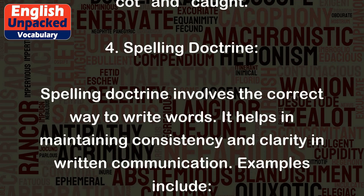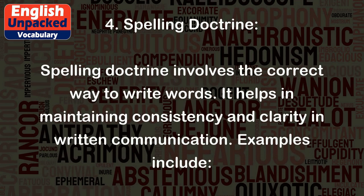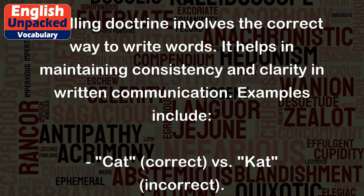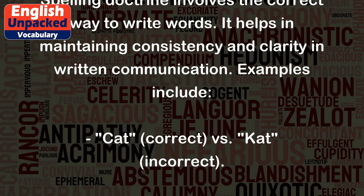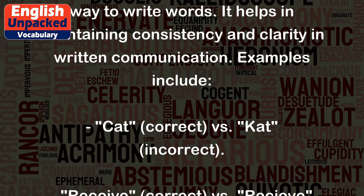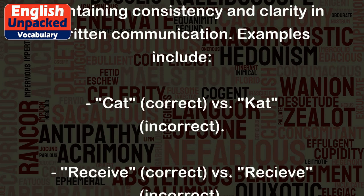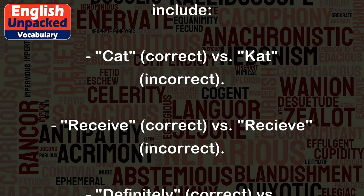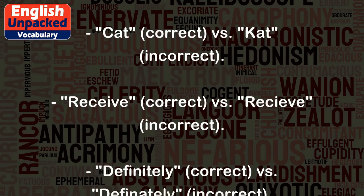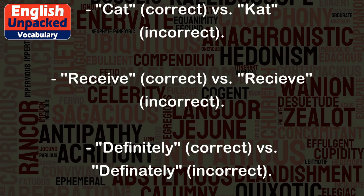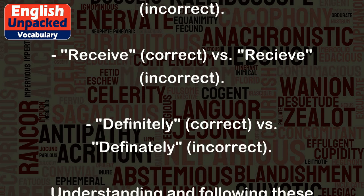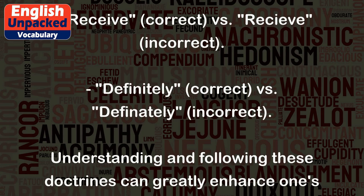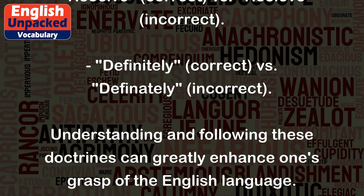Spelling Doctrine. Spelling doctrine involves the correct way to write words. It helps in maintaining consistency and clarity in written communication. Examples include: 'Cat' (correct) versus 'kat' (incorrect); 'Receive' (correct) versus 'recieve' (incorrect); and 'Definitely' (correct) versus 'definately' (incorrect).